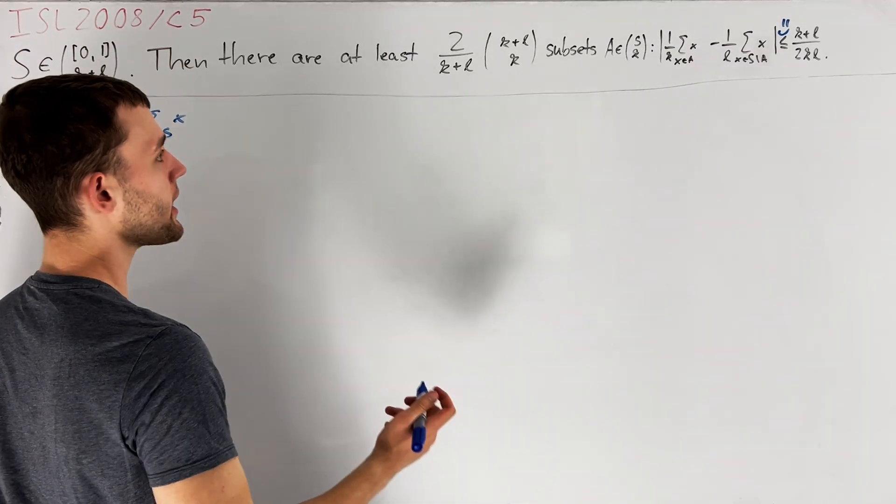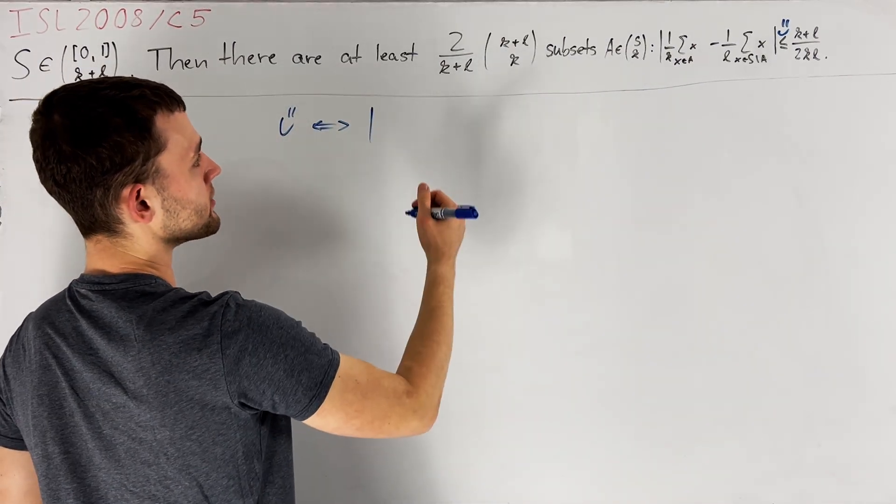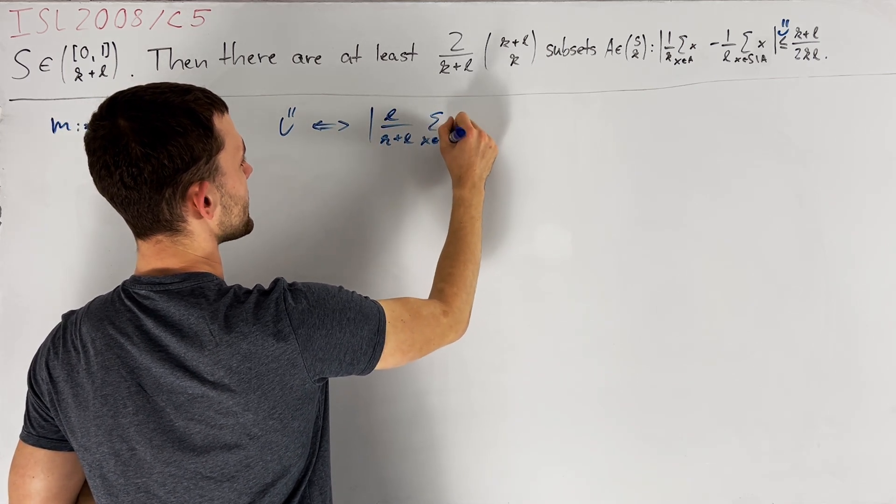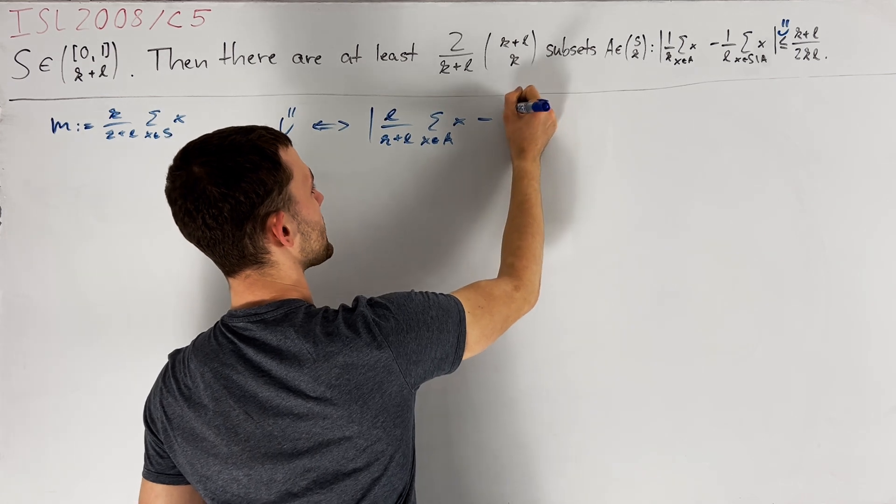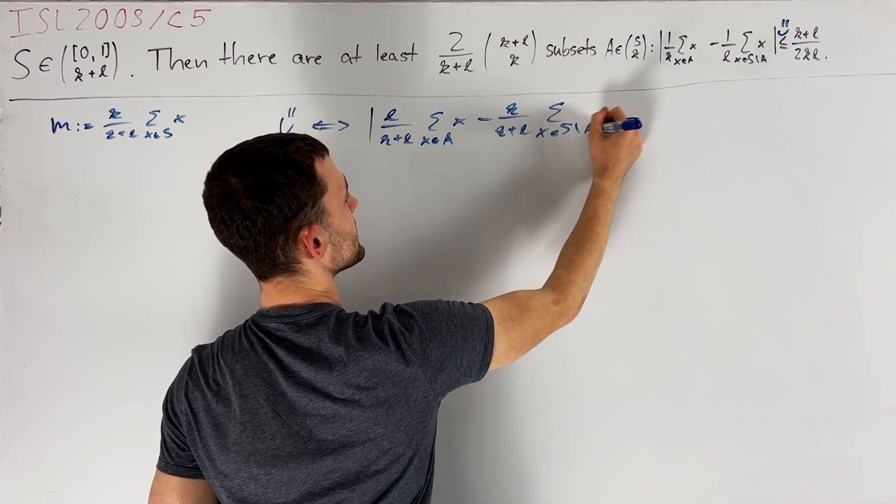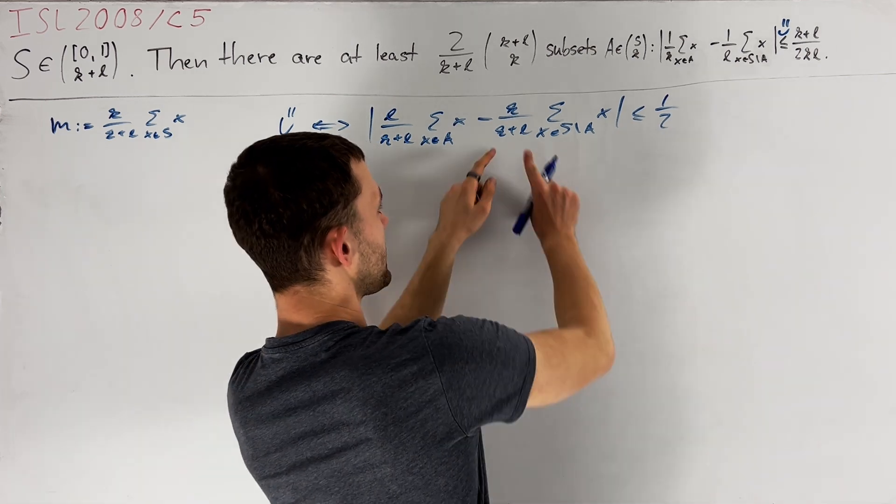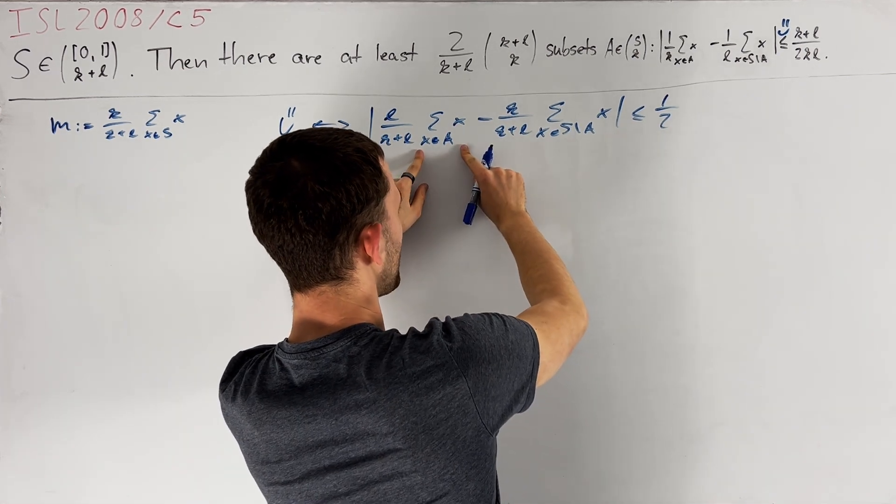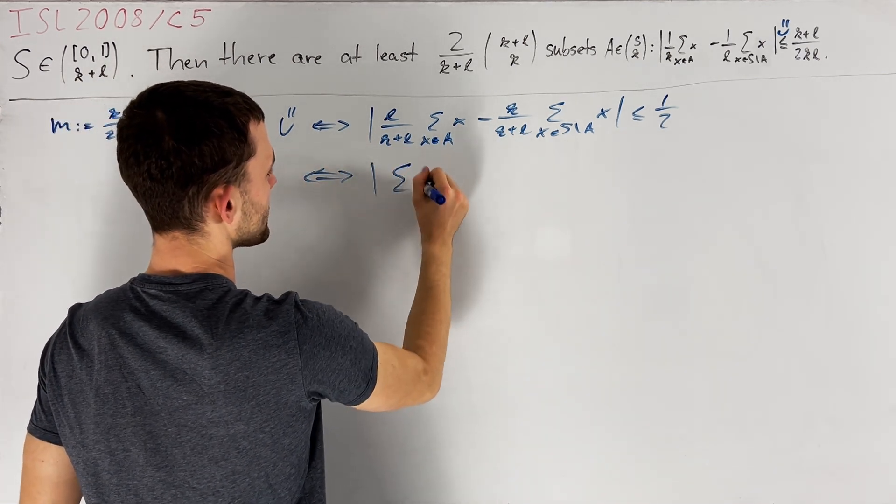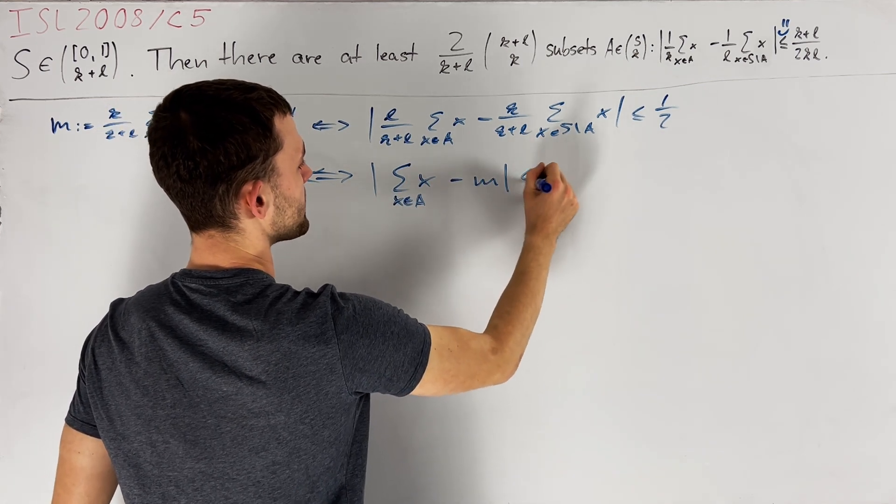Multiplying both sides by KL divided by K plus L, we see that Smiley is equivalent to saying that the absolute difference of L divided by K plus L sum X in A, X minus K divided by K plus L sum X in S minus A of X is less than or equal to a half. Adding and subtracting K divided by K plus L times the sum of elements in A, we obtain that this is equivalent to sum X in A of X minus M less than or equal to a half.